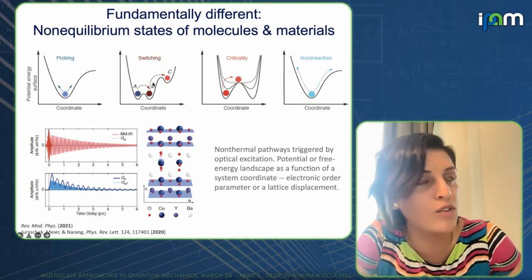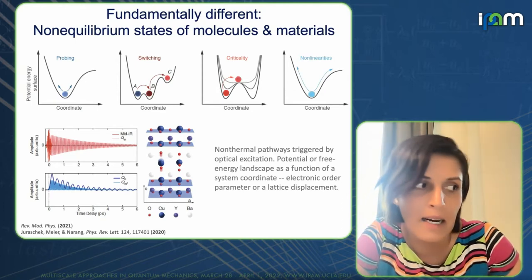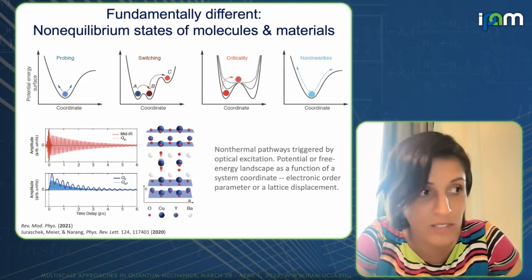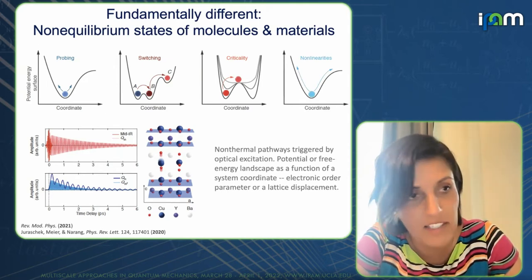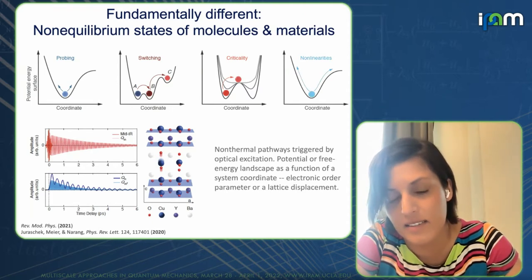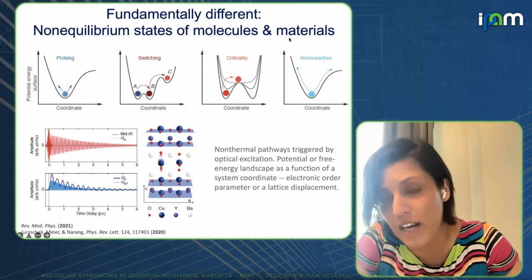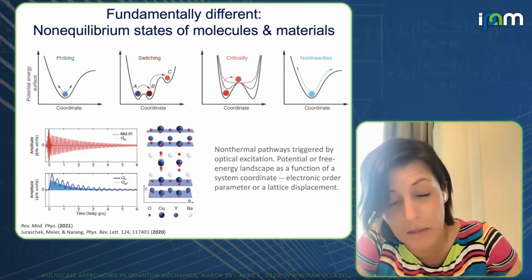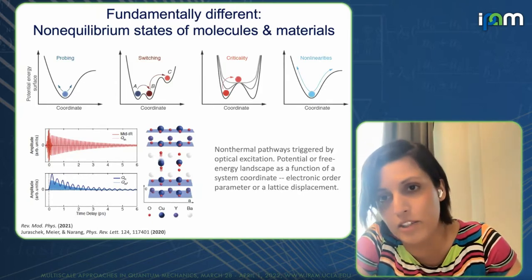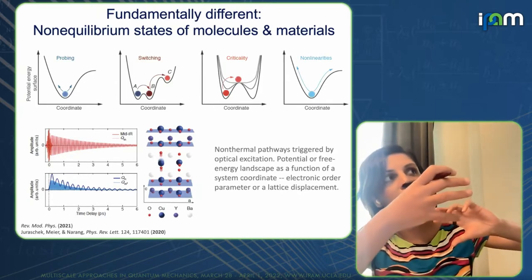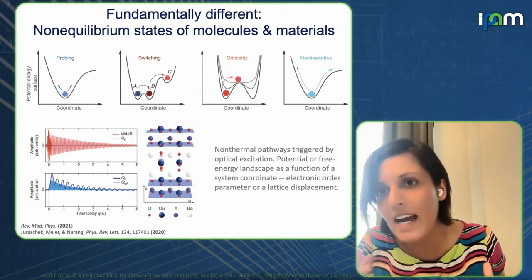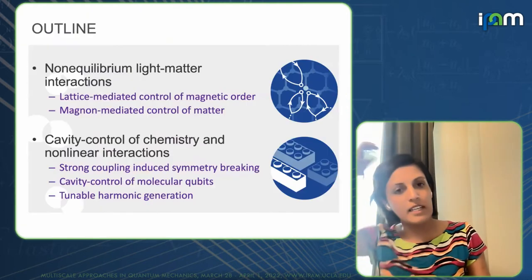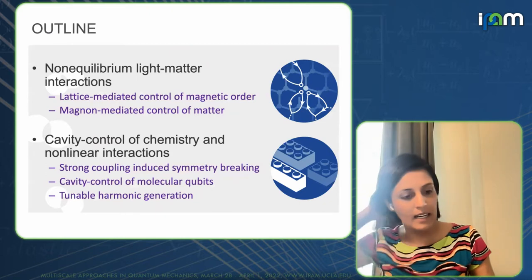Things get more interesting when you're talking about switching — could be between degenerate ground states or something metastable. In such situations, if you try to describe things using any mean-field theory or modifications thereof, there are challenges. We need to do that sometimes because otherwise we don't have any approaches, but I think this presents some interesting questions — especially critical phenomena and strongly nonlinear phenomena, particularly those enabled by nonlinear terahertz microscopy, where you can convert between different types of order parameters.